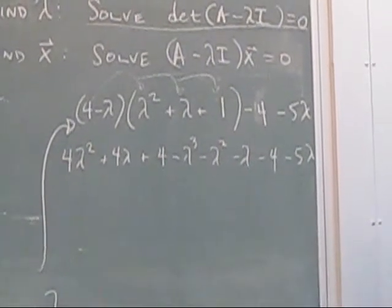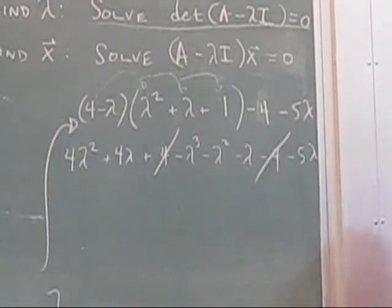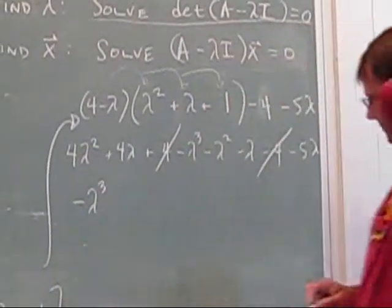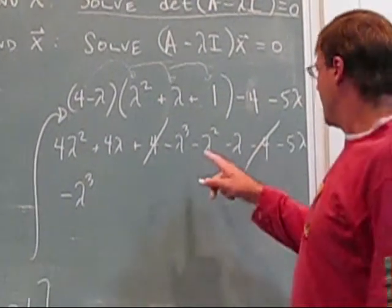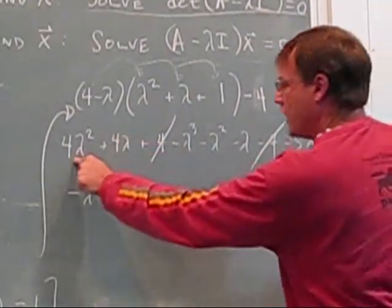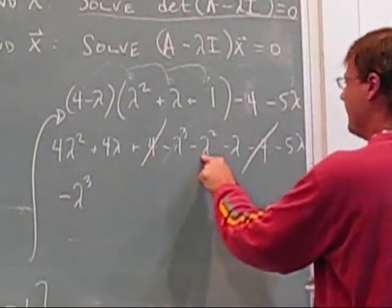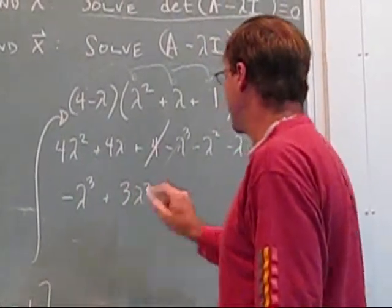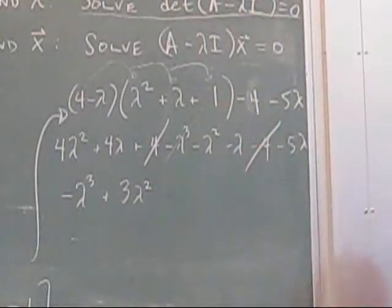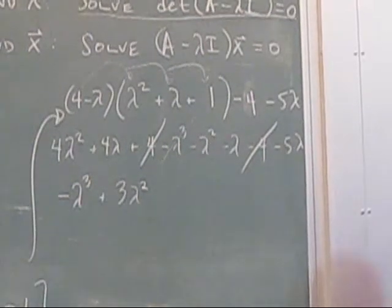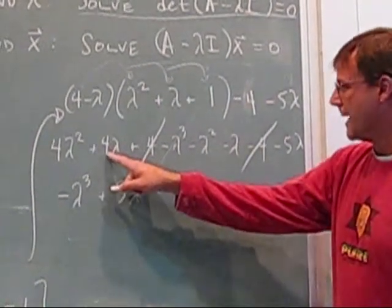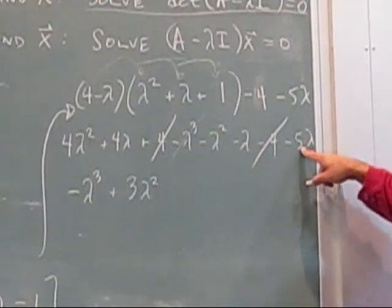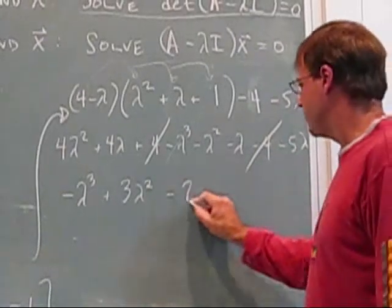Okay, so let's combine the terms. This 4 and this negative 4 cancel. I have a negative lambda cubed here. I have a 4 lambda squared and a negative lambda squared, so that makes 3 lambda squared. Then I have a 4 lambda and a minus lambda and a minus 5 lambda, so that makes negative 2 lambda.